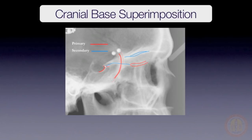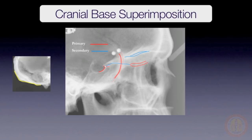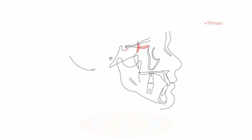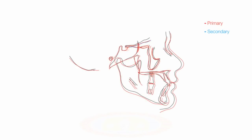Additionally, the occiput can be used to aid in proper orientation. While the occiput is not a stable structure during growth, it can be used as a rotational reference. In conclusion, the accurate use of the primary and the secondary cranial-base structures makes it possible to reliably represent the overall changes that take place during treatment or during growth cycles.